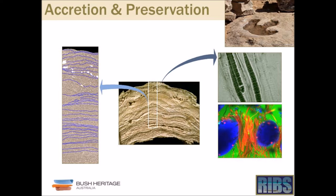One of the most important things to remember about stromatolites is that they're actually trace fossils. Like a dinosaur footprint — it's not a bone, not part of the dinosaur, but evidence the dinosaur was once there. In the same way, these laminations are evidence that the microbial community was once there. Only about 1% of known stromatolites have bacteria actually entombed as a fossil.